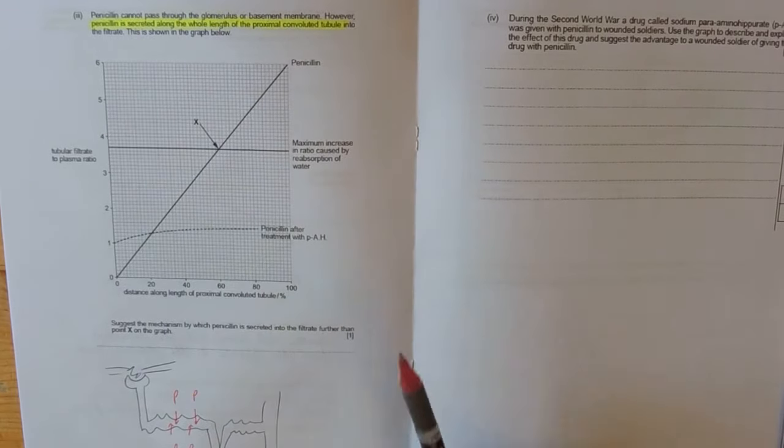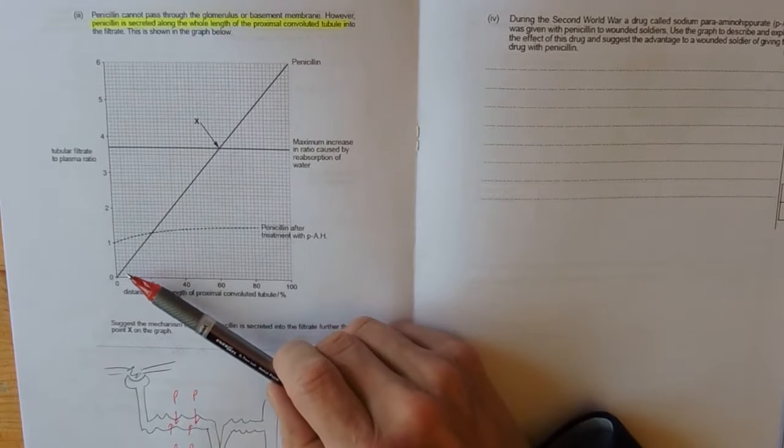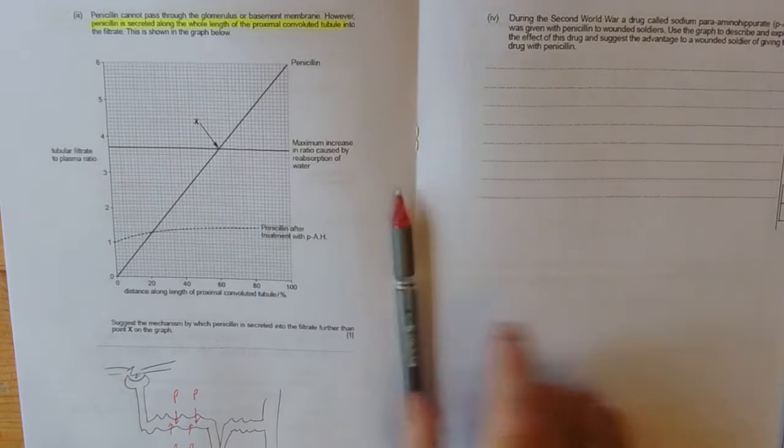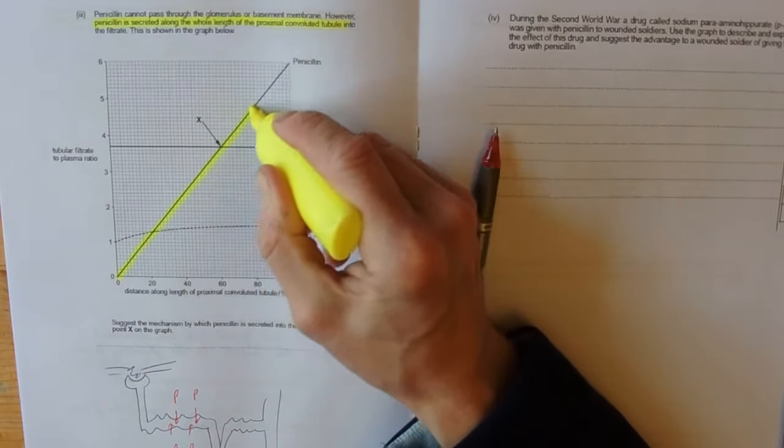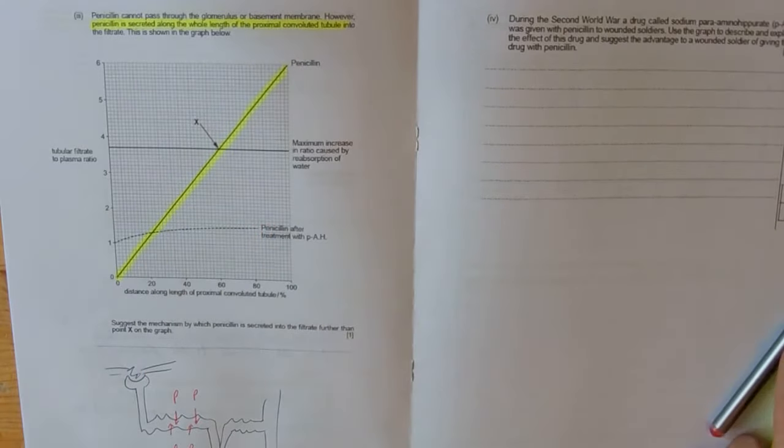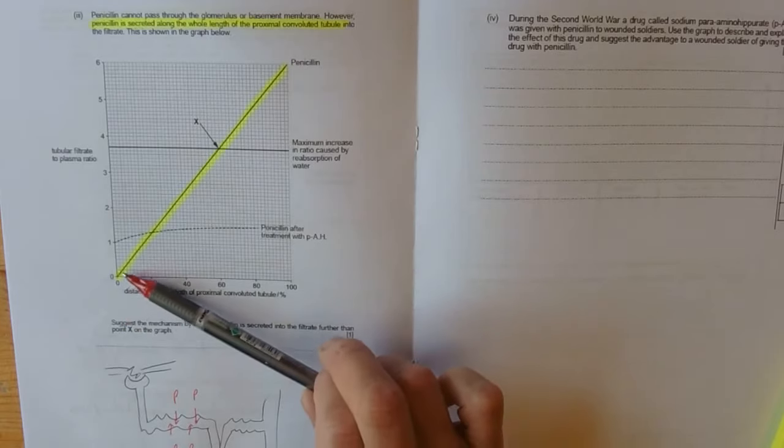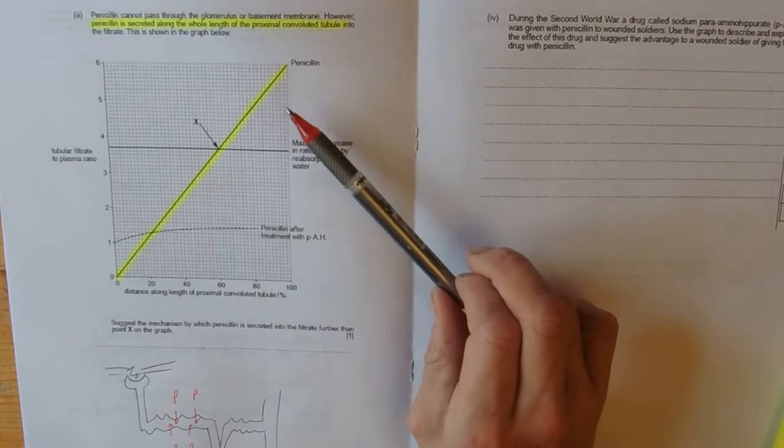And so, as we go along the length of the tubule, this goes up and that is just the penicillin being secreted.